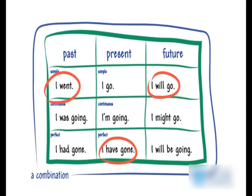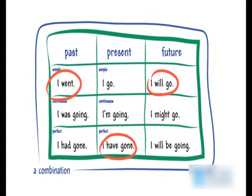The tense formulas are: past simple, past continuous, past perfect; present simple, present continuous, present perfect; and future simple, future continuous, and future perfect continuous.